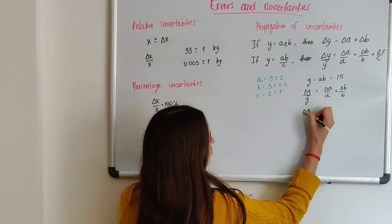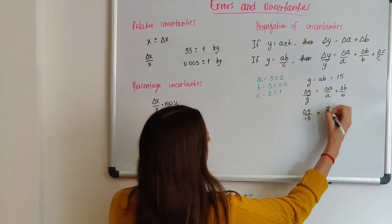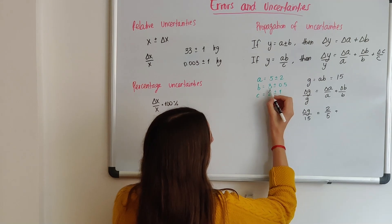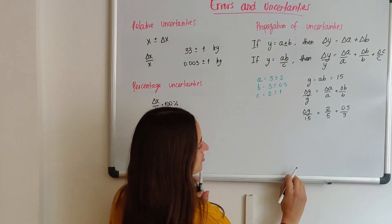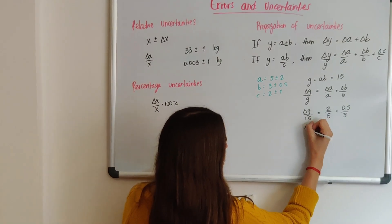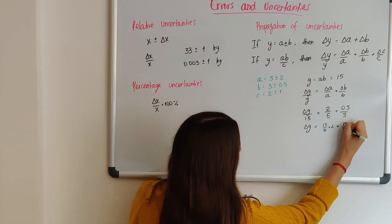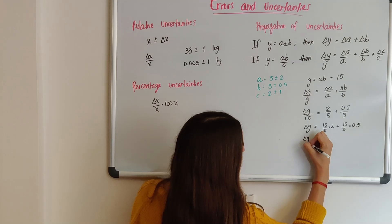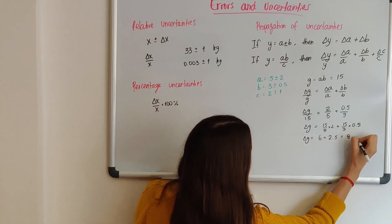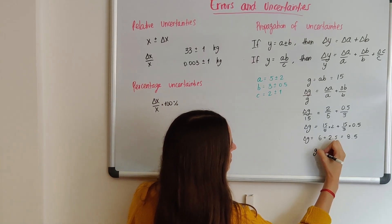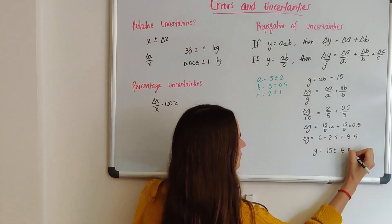So delta g, I don't know what it is. But g, I just calculated, is 15. Then I also have delta a, which is 2, over a, which is 5, plus delta b, which is 0.5, over b, which is 3. So if I multiply everything by 15, I'm going to get 15 over 5 times 2, plus 15 over 3 times 0.5, which gives me 3 times 2, which is 6, plus 5 times 0.5, which is 2.5, which is 8.5. So my answer would be, g is equal to 15, plus or minus 8.5.